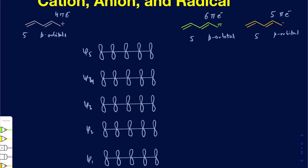If you have five set of unhybridized p orbitals, the maximum number of nodes you can possibly have would be n minus 1, so that's 5 minus 1, which gives you 4. The minimum is going to be 0. So your orbitals should be arranged such that you have 0 nodes at the bottom and 4 nodes at the top. I always tell students to draw the first one and the last one first because they are the easiest to recognize and draw, and then we fill in ψ2, ψ3, and ψ4.